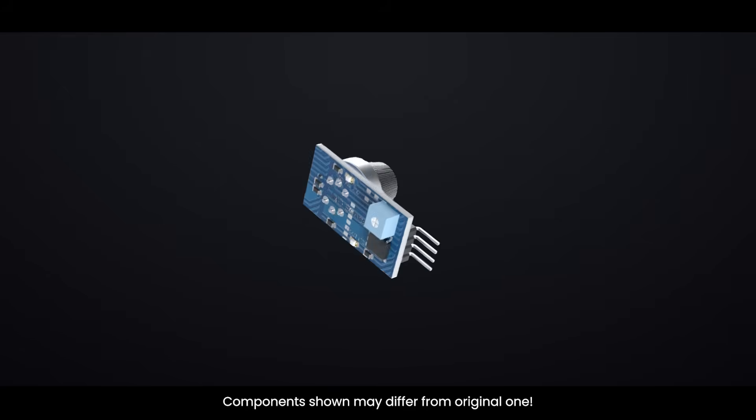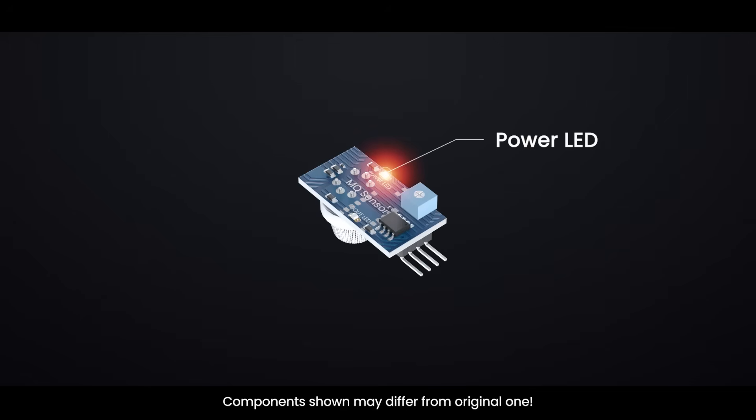The module also has two indicator LEDs. The power LED lights up when the module receives power. The status LED lights up when the gas concentration exceeds the threshold you've set.